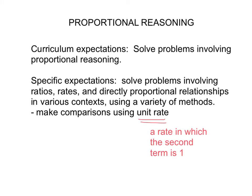A unit rate is a rate in which the second term is one. For example, if we said that the rate you get paid per hour is $10.25 per hour, this is a representation of a unit rate because the second term is one. For every one hour you make $10.25. This example compares the amount earned to one hour of time.